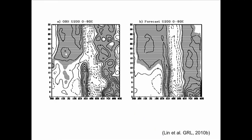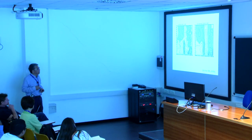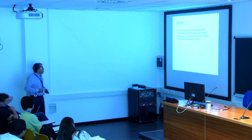To show why this happens: in observations, lagged composites of 200 mb zonal wind anomaly after a strong NAO show a strong polar zonal wind that persists for about two weeks, and then suddenly an increase of zonal wind appears in the tropics. Our forecast model reproduces a very similar structure — after about 10 days, there is a sudden increase of tropical zonal wind, which is associated with MJO phase 7.